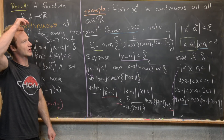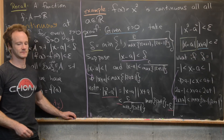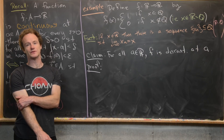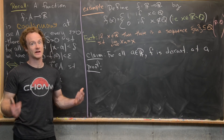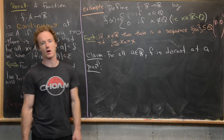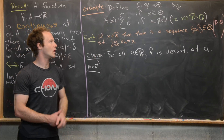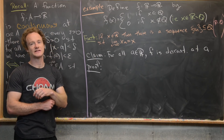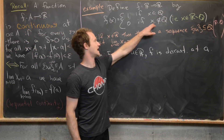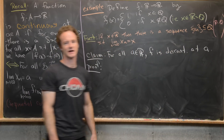Now we'll look at a classic example of a function that is discontinuous everywhere, defined over all of the real numbers. We define f : ℝ → ℝ by: f(x) = 1 if x is rational, and f(x) = 0 if x is irrational (i.e., x ∈ ℝ \ ℚ).